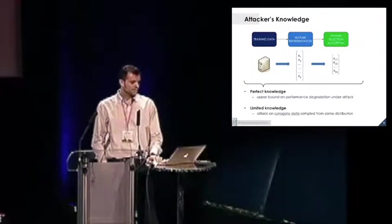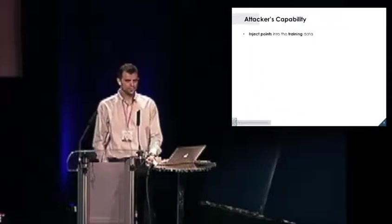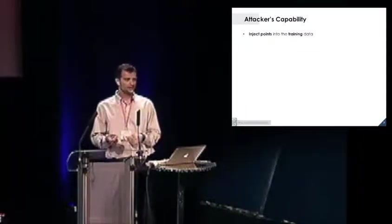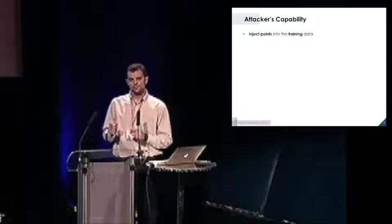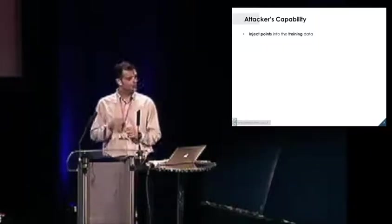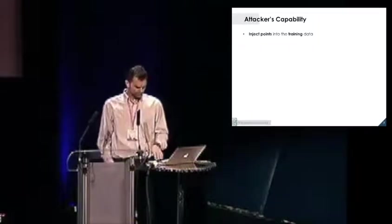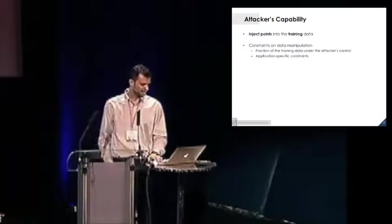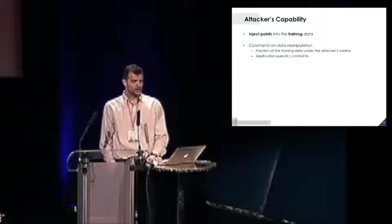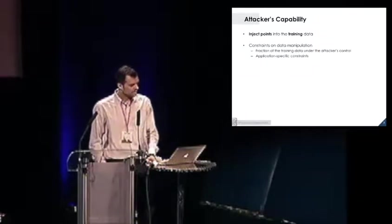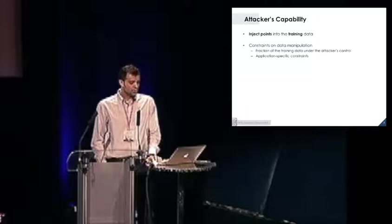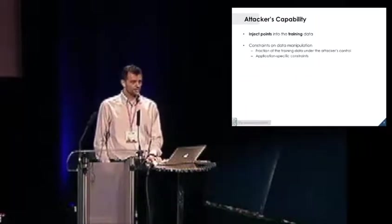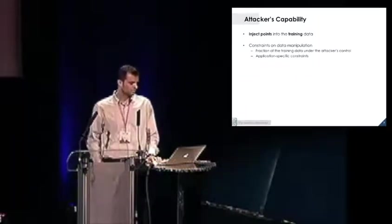As for the attacker's capability, since we want to influence the feature selection process, the attacker has to have the capability of injecting or adding points into the training data. This is the case where you have online learning systems which are retrained on data coming during operation. It's likely that an attacker can send points during operation and then they are used to learn the system. There are clearly constraints on the actions that the attacker can do on this data. Usually it can only control a small fraction of the training data.